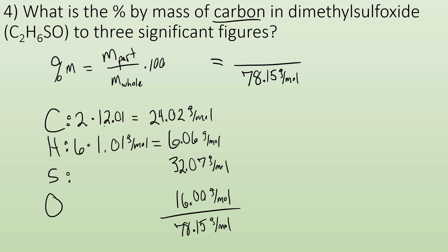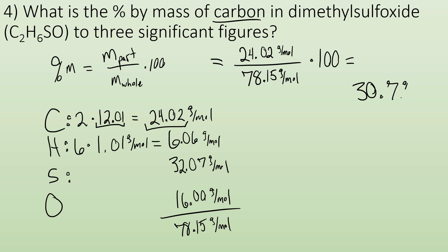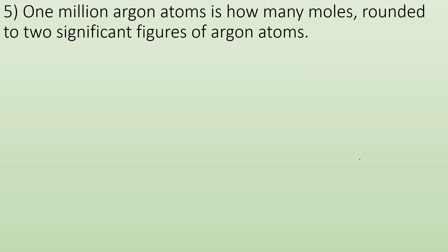For carbon, it's the mass of all the carbons — 24.02 grams per mole — divided by 78.15 grams per mole, times 100. To three sig figs, that's 30.7%.